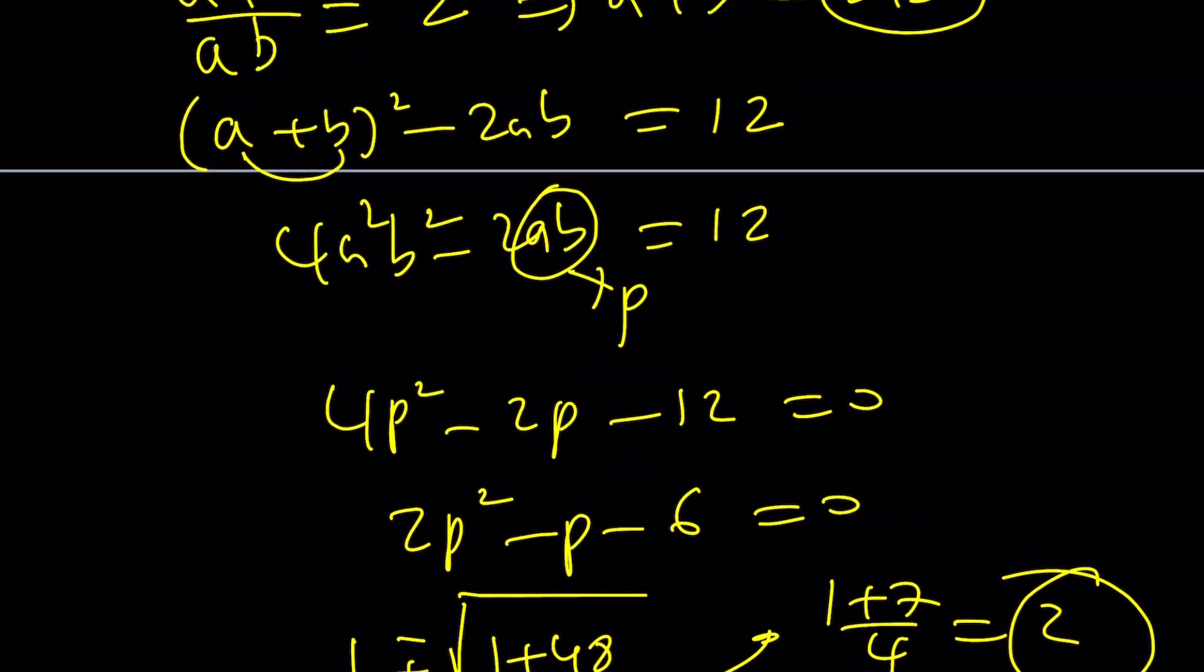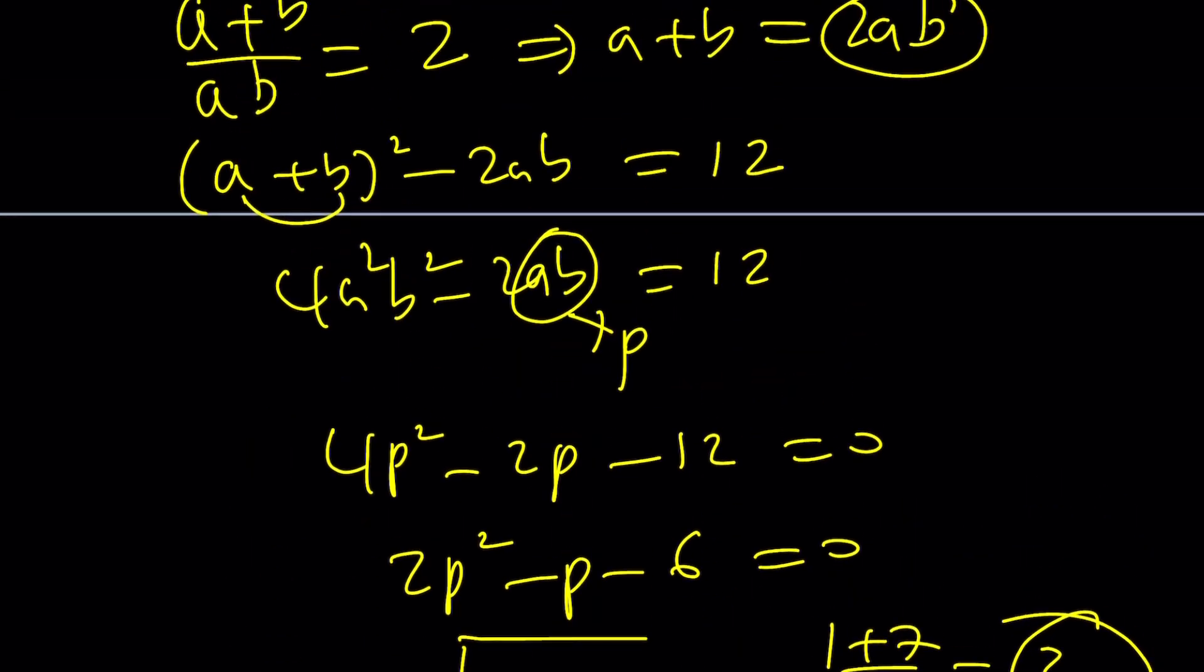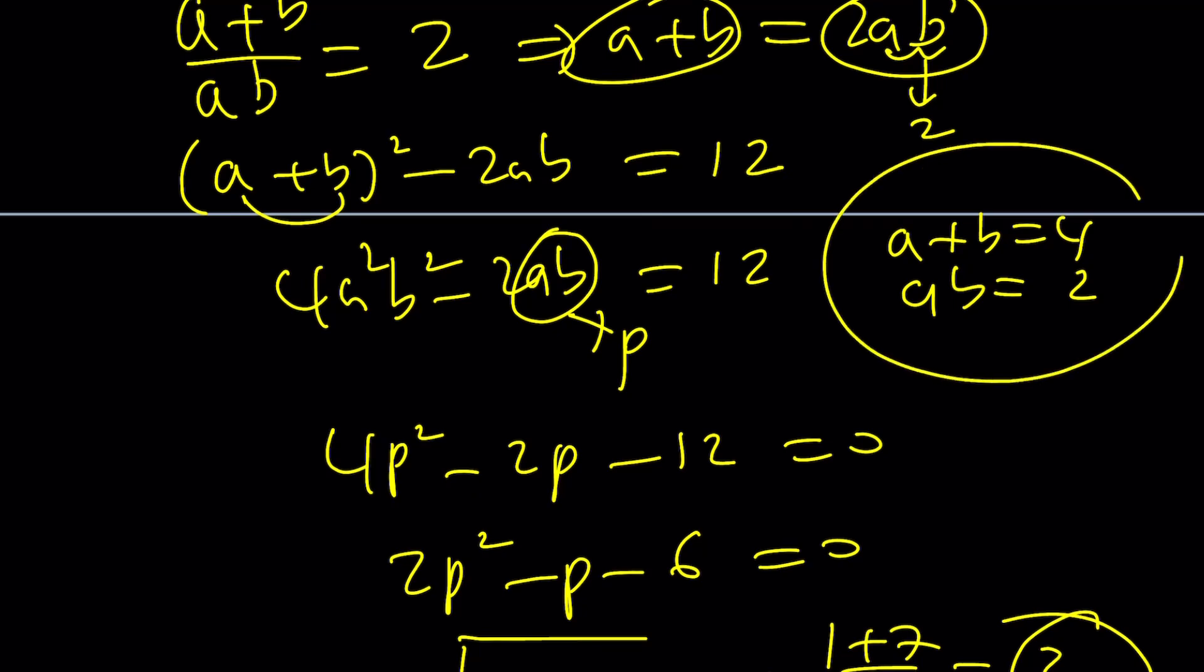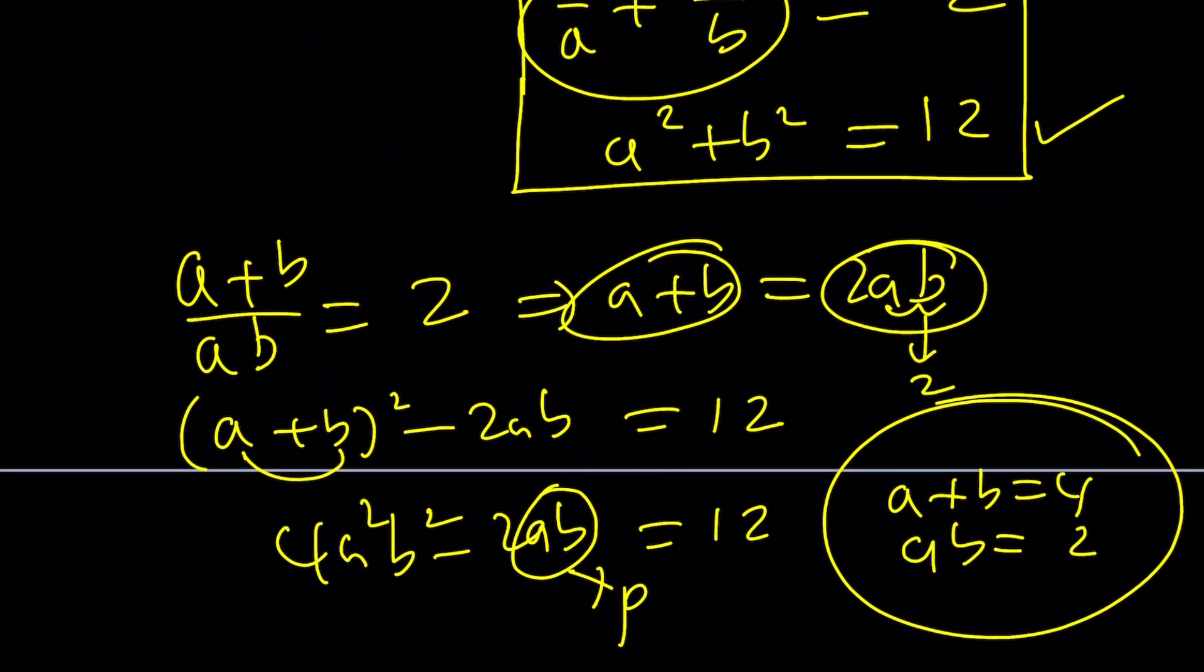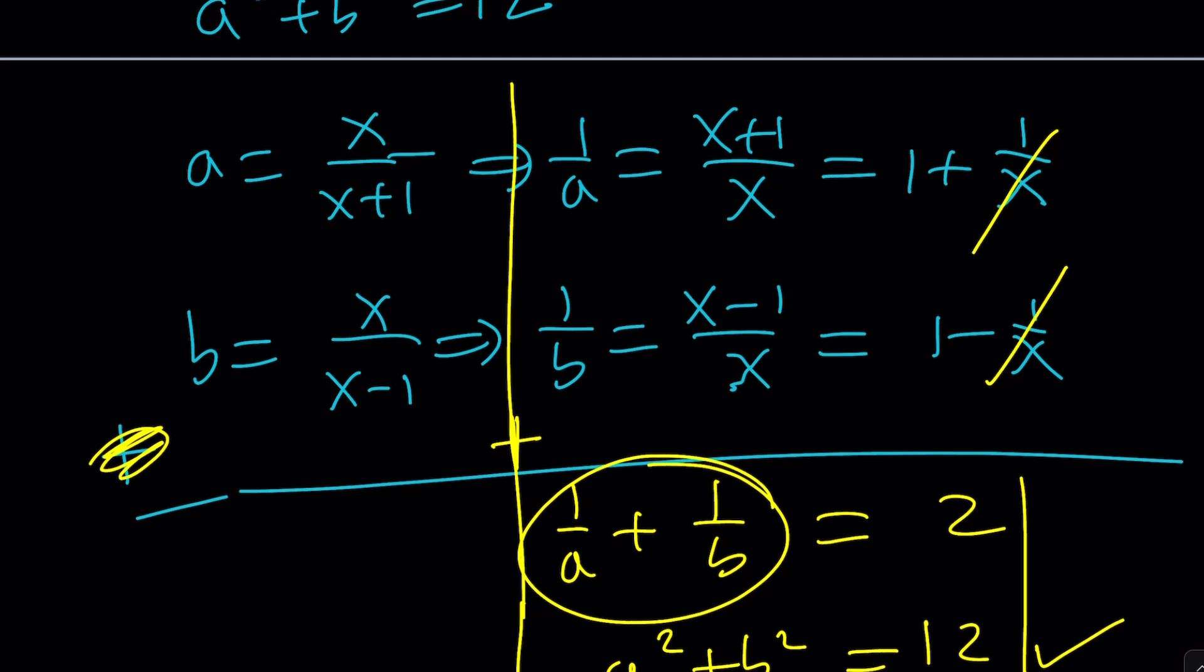So if you just take one of these, let's say p equals 2. And you can plug in p equals 2 here to get a plus b equals 4. So a plus b is 4. ab is 2. Then you got to find two numbers whose product is 2 and whose sum is 4. So on and so forth. You get the idea? And then from there, you can hopefully find a and b values. And then once you find the a and b values, you should be able to find the x values. Again, that's a lot of work. So I'm going to leave that up to you.